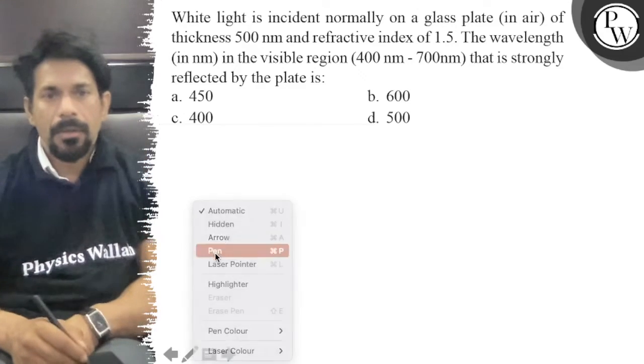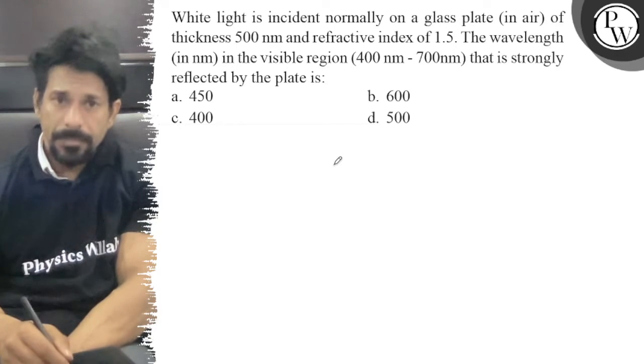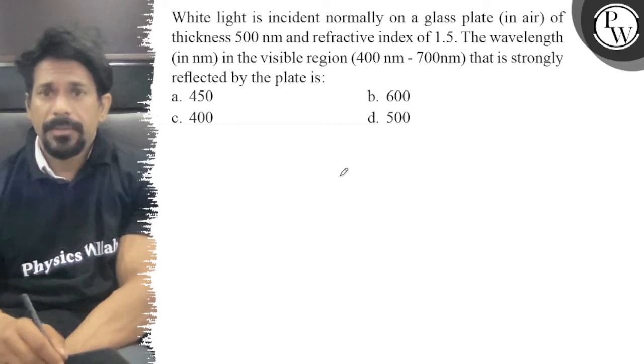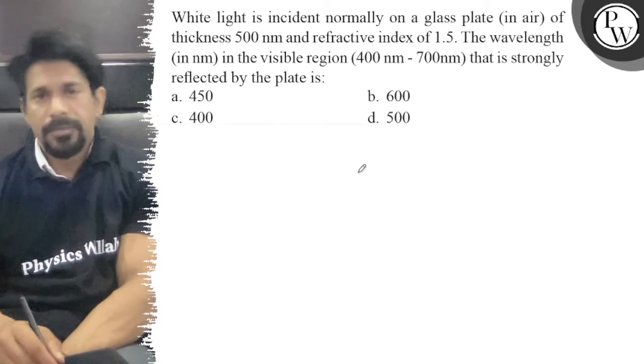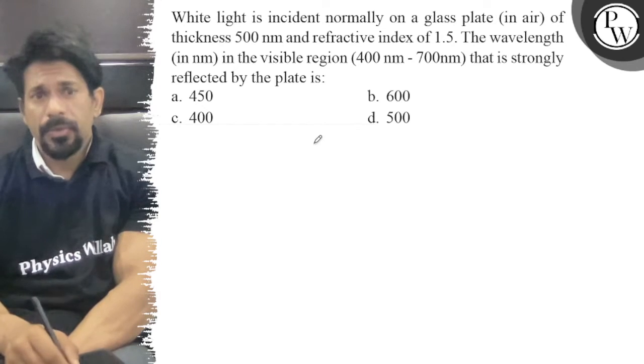Hello, let's see the question. White light is incident normally on a glass plate of thickness 500 nm and refractive index 1.5. The wavelength in the visible region 400 to 700 nm that is strongly reflected.